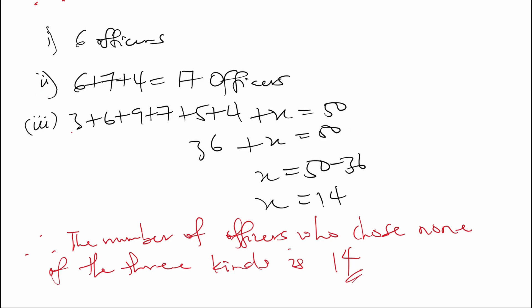The number of officers who chose none of the three kinds is 14. This brings us to the end of question 6 of the 2021 Commerce WASSI Theory questions. Don't forget to like and subscribe for more, and leave your comments and questions in the comment section. In our next video, we'll be solving question 7.